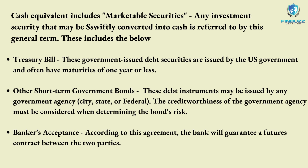Cash equivalents include the following: First, marketable securities — a general term referring to any investment security that can be quickly turned into cash, which businesses frequently group together on their balance sheet. Second, treasury bills — government-issued debt securities frequently with maturities of one year or less, issued by the US government. Third, other short-term government bonds — debt instruments that any government agency, city, state, or federal, may issue, where the agency's creditworthiness must be taken into account when assessing risk.